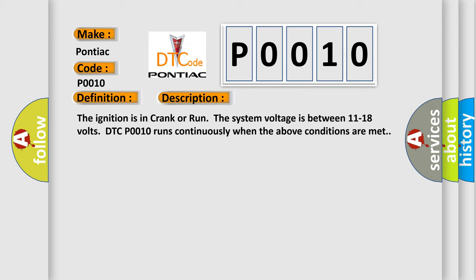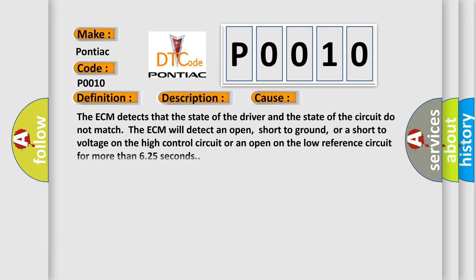This diagnostic error occurs most often in these cases: The ECM detects that the state of the driver and the state of the circuit do not match. The ECM will detect an open, short to ground, or a short to voltage on the high control circuit or an open on the low reference circuit for more than 6.25 seconds.